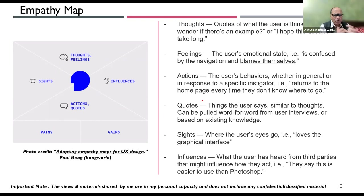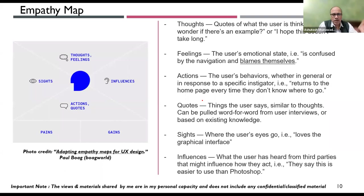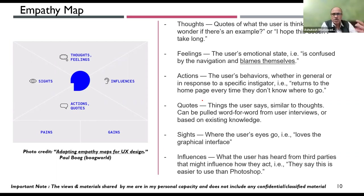At the bottom of the empathy map are two boxes: pains and gains. Pains list four to five bullet points of the user's current problems. Gains are what the user expects when the product is redesigned or re-engineered. This framework was credited to Paul Boag in his book. All these tools are available as templates in Mural or Miro.